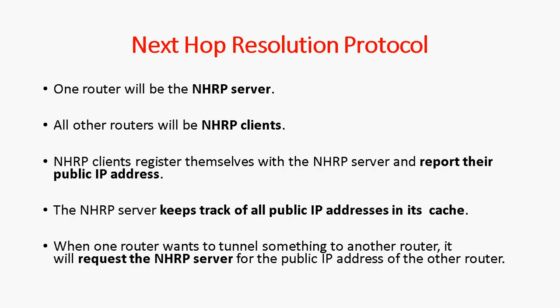One router will be an NHRP server and all the other routers will be NHRP clients. The NHRP clients register themselves with the NHRP server and report their public IP address. The NHRP server keeps track of all the public IP addresses in its cache. When one router wants to tunnel something to another router, it will request the NHRP server for the public IP address of the other router.